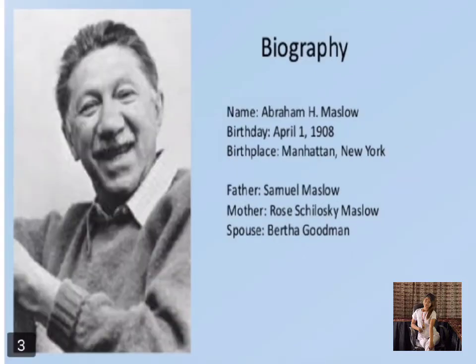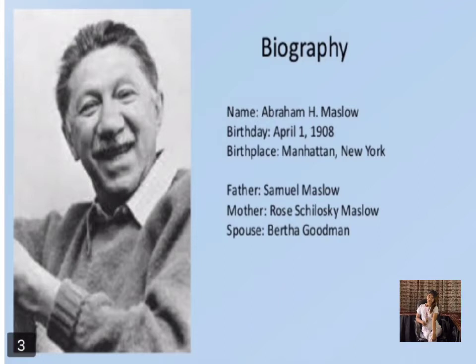Abraham Harold Maslow had the most lonely and miserable childhood of any person discussed in theories of personality. He was born in Manhattan, New York on April 1, 1908, and spent his unhappy childhood in Brooklyn. Maslow was the oldest of seven children born to Samuel Maslow and Rose Maslow. His childhood was filled with intense feelings of shyness, inferiority, and depression.